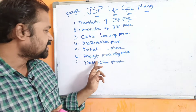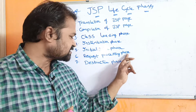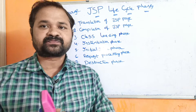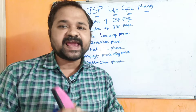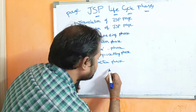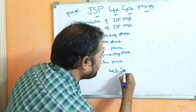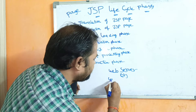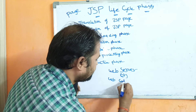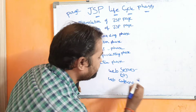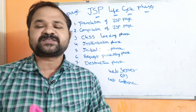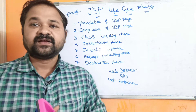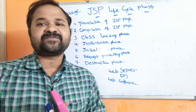The 6th phase is the Request Processing phase, and the 7th one is the Destruction phase. Any JSP program is executed by a web server or web container. We have a web server or web container that takes the responsibility of executing the JSP program. The best example of a web server is Apache Tomcat.